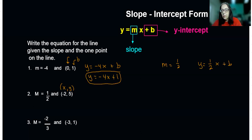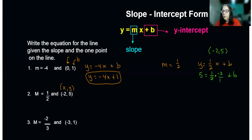So y is five and x is negative two. I've got a fraction there so I'll make that a fraction. I'm using the point negative two, five. These will reduce down to ones, so one times negative one is just negative one plus b.